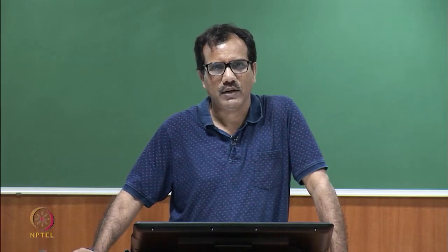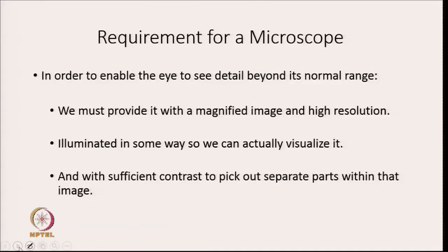To enable our eye to see details beyond its normal range, we need to provide a magnified image with high resolution. We also need to illuminate the object so we can visualize it, and we need to provide sufficient contrast to pick out separate parts within that image. These are the three requirements for a microscope.